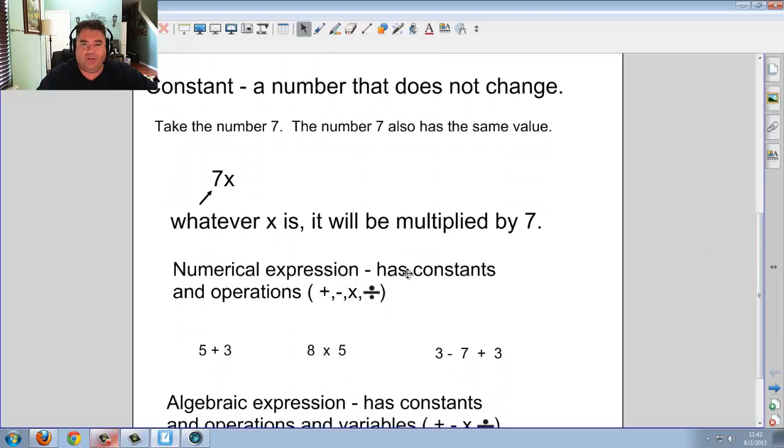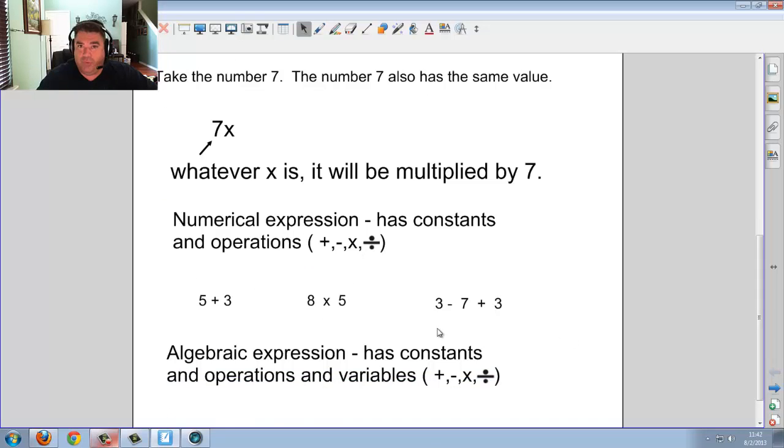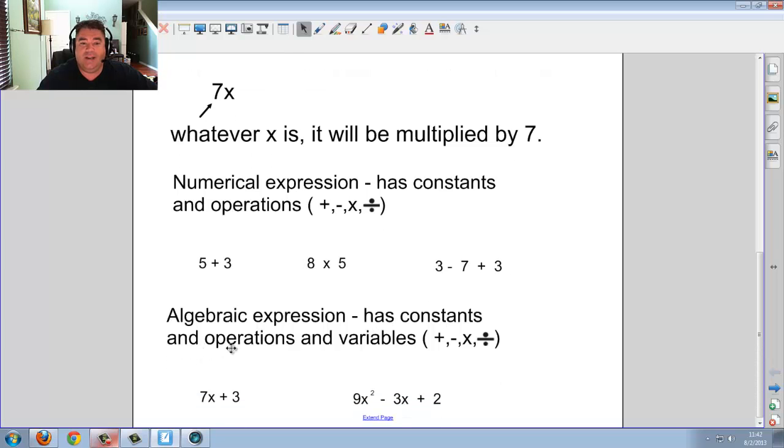Numerical expression has constants and operations. So if you have 5 plus 3, 8 times 5, 3 minus 7 plus 3, all you'll see is the constant and operations, numbers and what to do with them. An algebraic expression, however, has constant and operation and variables. There you will see not only your operations, you'll have your constant, but you'll also have variables as well.